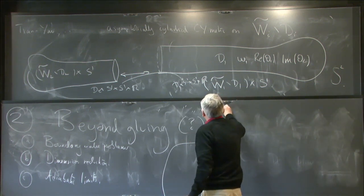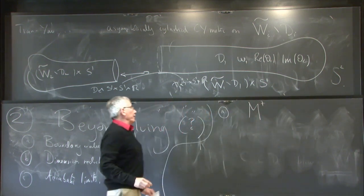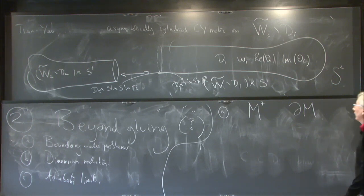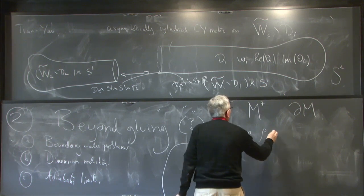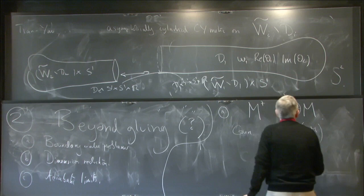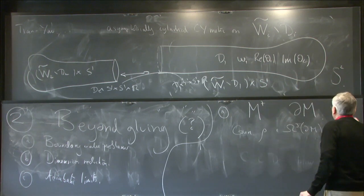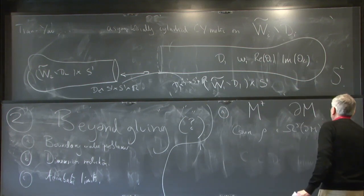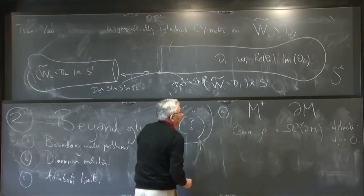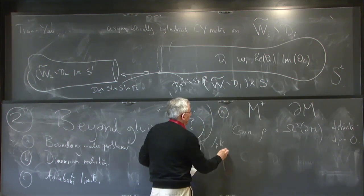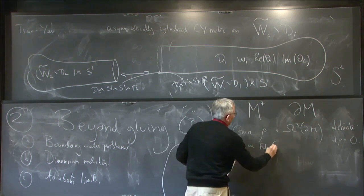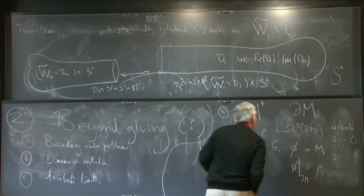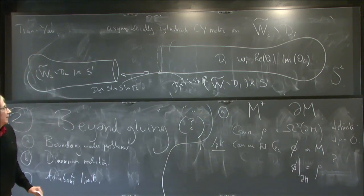We now consider a compact oriented manifold M with boundary. Suppose we're given a three-form ρ on the boundary which is 'definite' — meaning it lies in the open set of special three-forms in six dimensions at each point — and closed, dρ = 0. This is data on the boundary, and we ask: can we find a G2 structure φ on M with φ restricted to the boundary equal to ρ? To get the best setup we should fix some cohomological data, but let's ignore that.